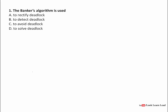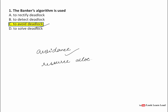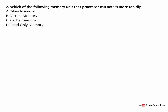Our first question is related to the Banker's Algorithm. The Banker's Algorithm is used to — there are four options: to rectify deadlock, to detect deadlock, to avoid, or to solve. The Banker's Algorithm is for deadlock avoidance and resource allocation, so the right answer is option C: to avoid deadlock.